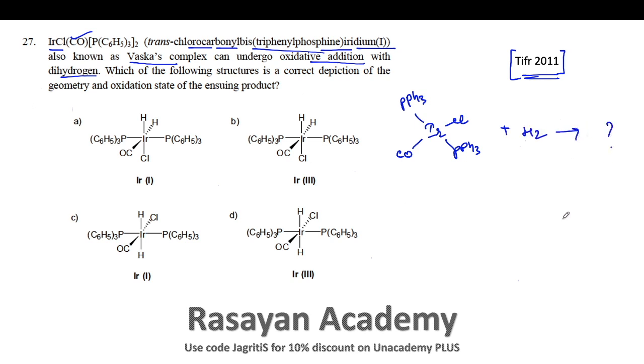How is the product going to be? That is a very simple question. You are just being asked the product of the oxidative addition. Here the iridium is there in the plus one oxidation state, so after oxidative addition it is supposed to be in iridium 3+ oxidation state because the oxidation state increases by two.